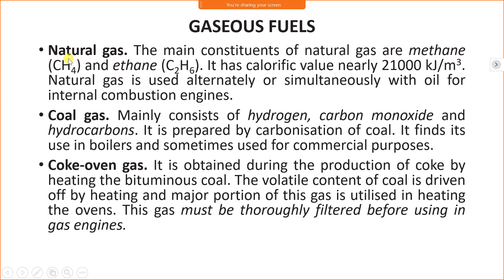Natural gas is a primary gaseous fuel. Its main constituents are methane (CH4) and ethane (C2H6), with a calorific value of nearly 21,000 kJ/m³. It is used alternately or simultaneously with oil in internal combustion engines. Coal gas, obtained by the carbonization (burning) of coal, mainly consists of hydrogen, carbon monoxide, and hydrocarbons. It is used in boilers and sometimes for commercial purposes.